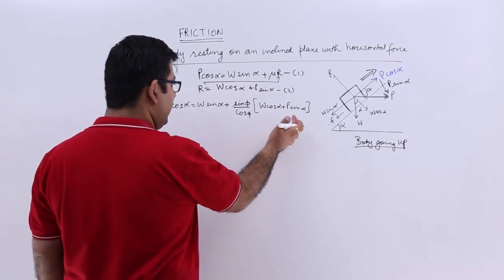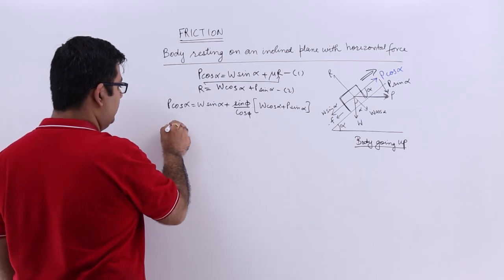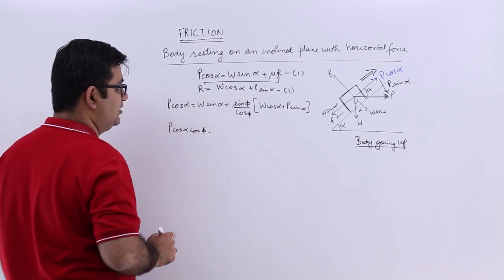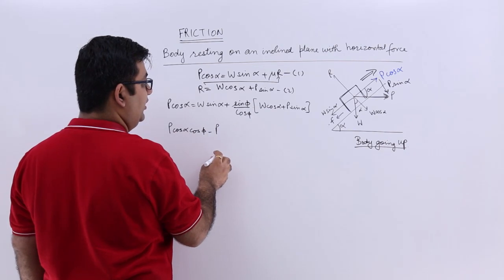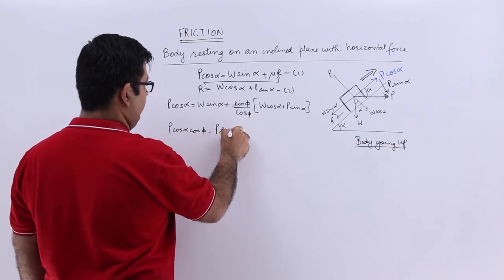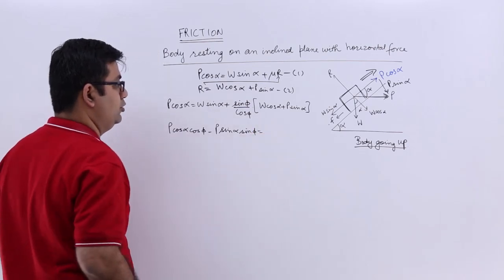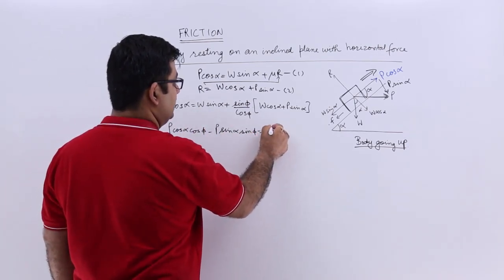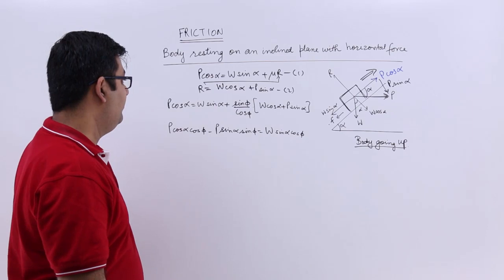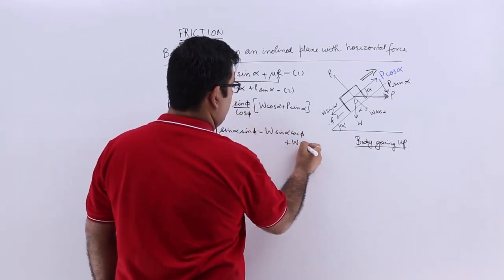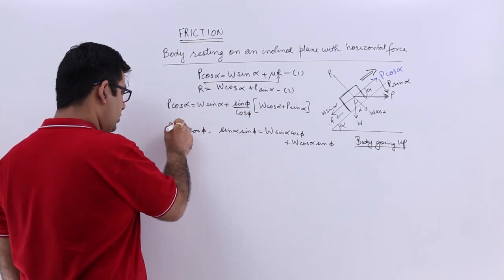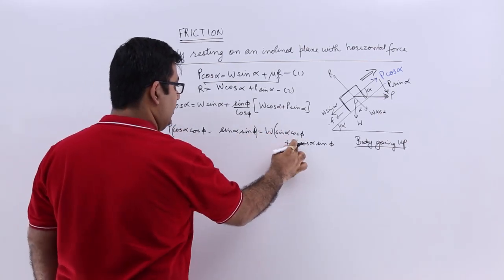Bringing P to one side: P cos alpha cos phi minus P sin alpha sin phi equals W sin alpha cos phi plus W cos alpha sin phi. Taking P common on the left and W common on the right.